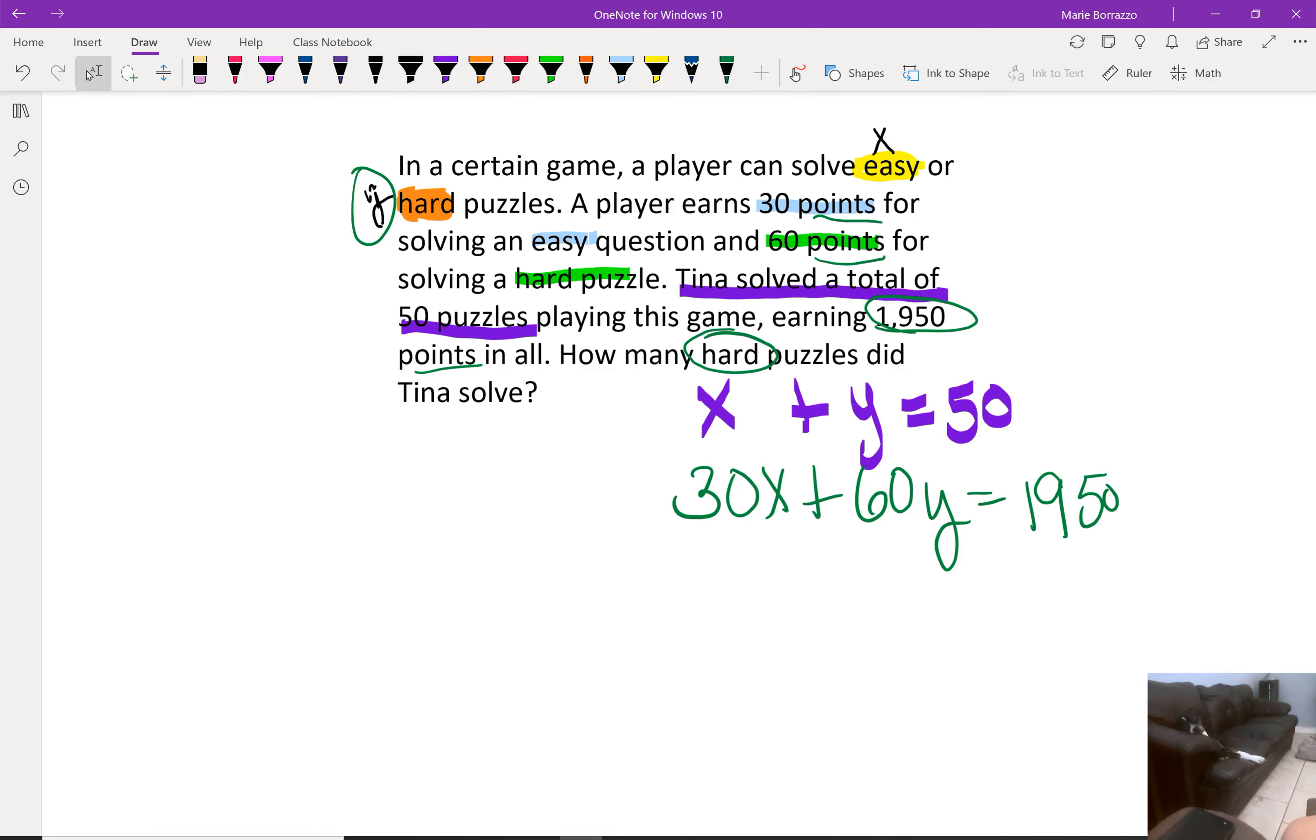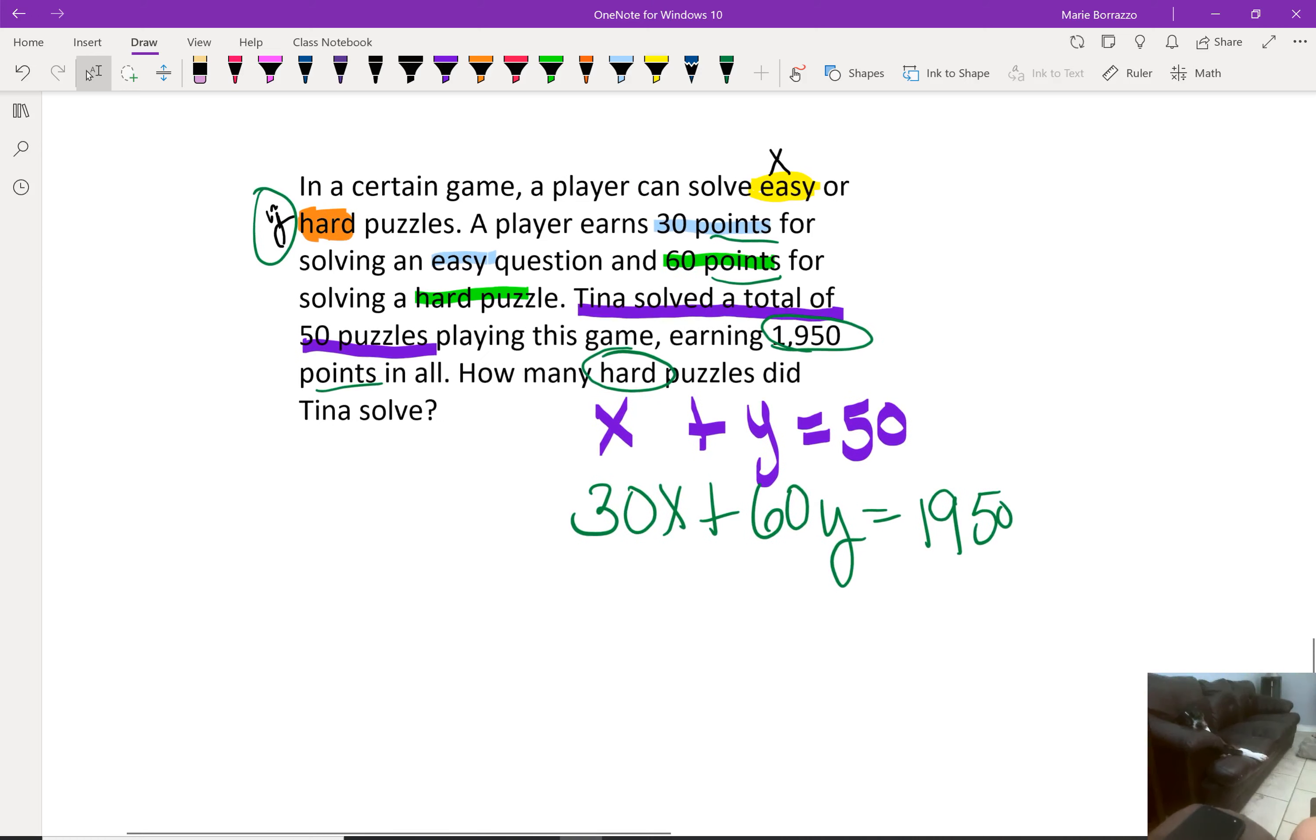So if I want to solve for y, what I'll do then—let's play around. Look at what happens if I solve for this equation and I subtract the y on both sides. I get x equals 50 minus y, right? Meaning that I'm going to plug in for x, 50 minus y.